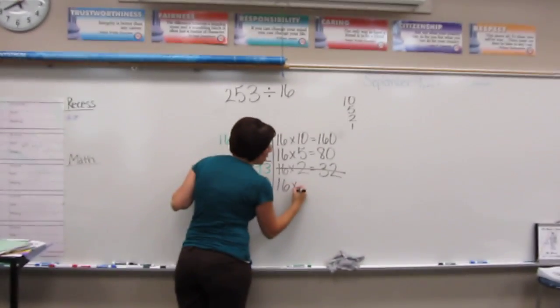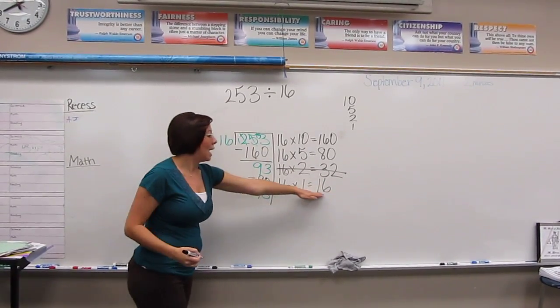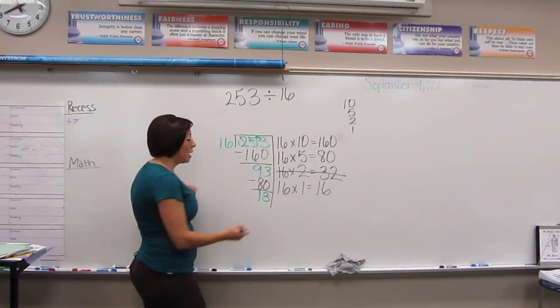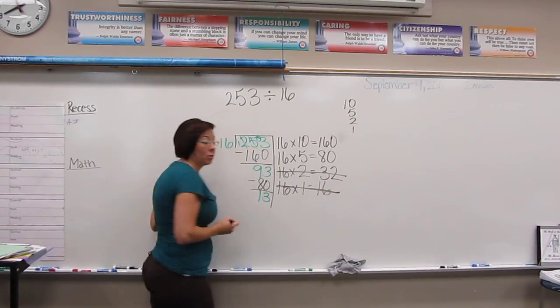Then I move to the next one down. 16 times 1 gives me 16. I can't subtract that from 13. I don't use it, so I also cross it out so I know I didn't use it.